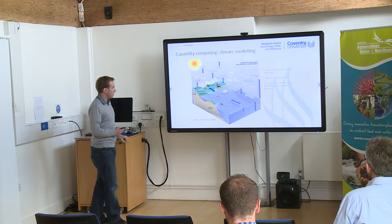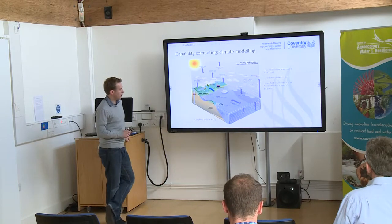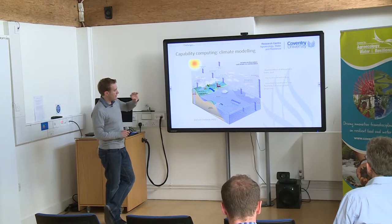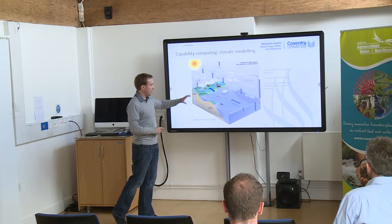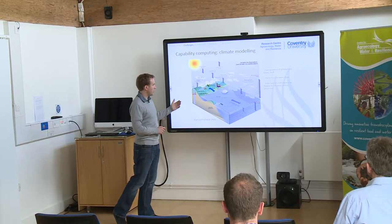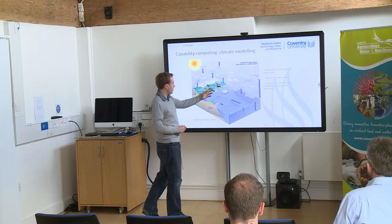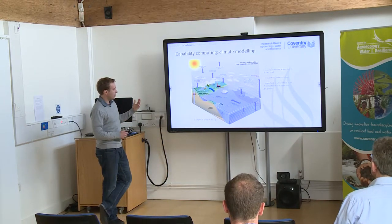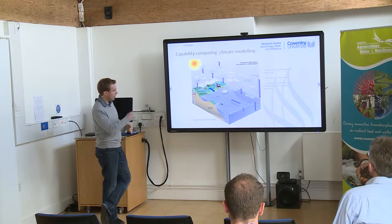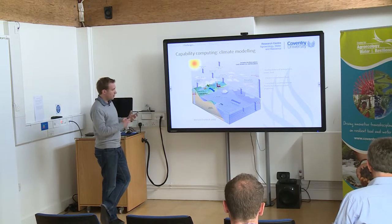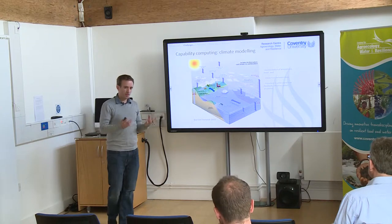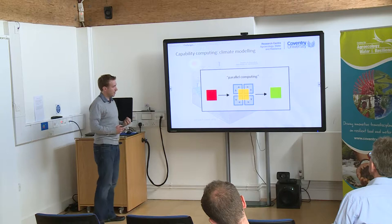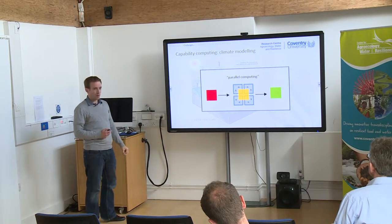A climate model is a representation of the atmosphere, the ocean, the land surface, and importantly the interactions between them — such as heat exchange, evaporation, rainfall, and exchanges with both land and sea. There are lots of processes happening together, which is why it becomes a very complex task and the kind of thing we would want to use parallel computing for. In reality, you may be running that on several hundred processors, maybe in the order of a thousand.